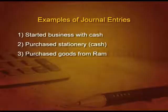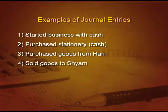We are going to discuss goods terminology in the next chapter. For now, when we purchase goods it is called purchase, and when we sell goods it is called sales. The next entry is: sold goods to Sham. Who is the receiver? Sham. What is going out? Goods. So the entry is: Sham account debit to sales. Instead of goods, we write sales.